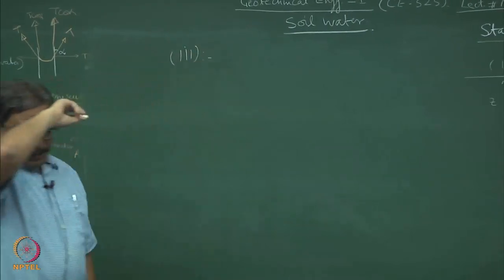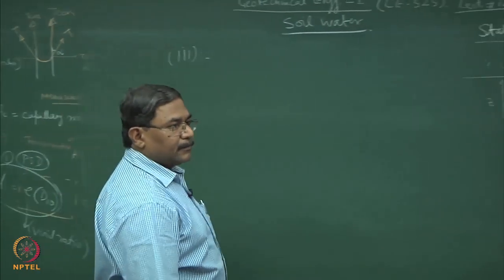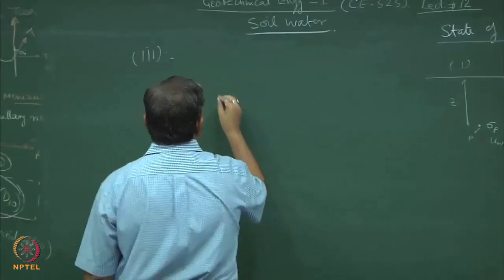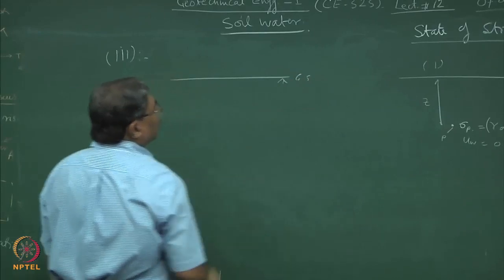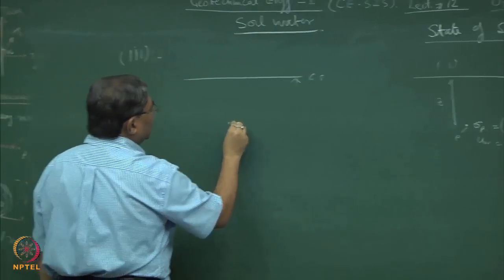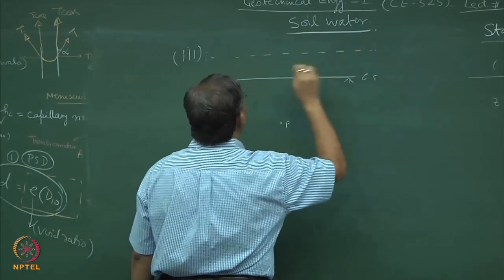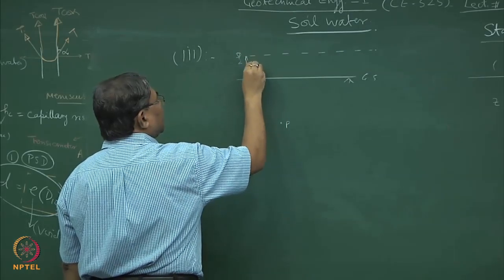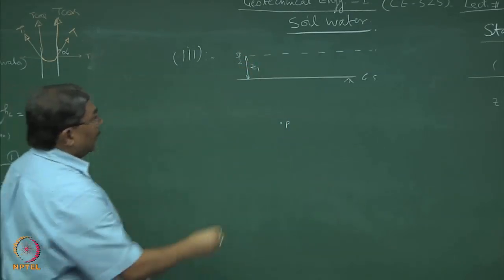This is the ground surface. During rains, what is going to happen? If this is point P — what about waterlogging? Say z1 is the depth of water above ground and z is the depth of point P below original surface. What is your intuitive feeling about what has happened to σ_P and u_w?